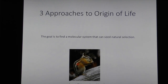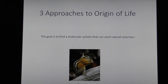This is a least chipmunk — maybe you've seen these around Jackson Hole. It's one of my favorite animals in this area. This is not an origin of life problem; this is a product of evolution. Natural selection, genetic variation, all of that. Doing research on origin of life is not trying to figure out how these kind of things happen — that's a different problem. We're trying to find a molecular system that can seed natural selection and get that started. Separate problems, both interesting but different.